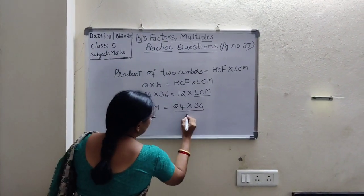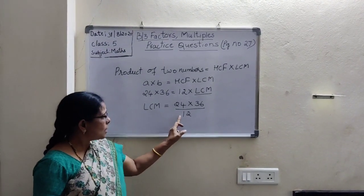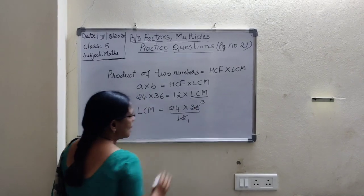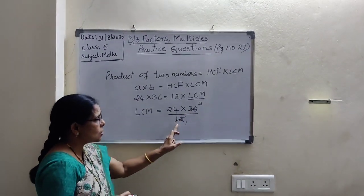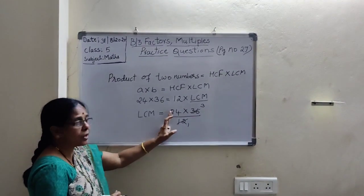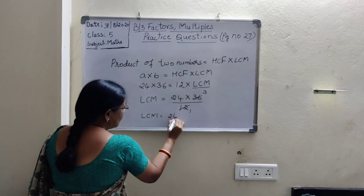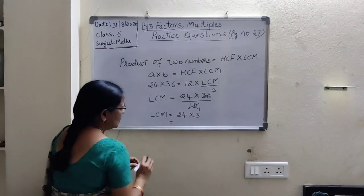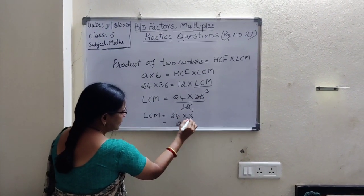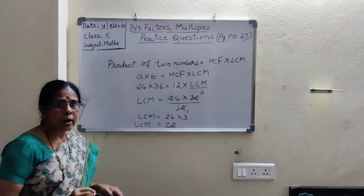This 12 we write in the denominator. Now cancel: 12 times 3 is 36, so 36 divided by 12 is 3. So LCM is equal to 24 into 3. 3 times 4 is 12, carry 1; 3 times 2 is 6, plus 1 is 7. So LCM is equal to 72.